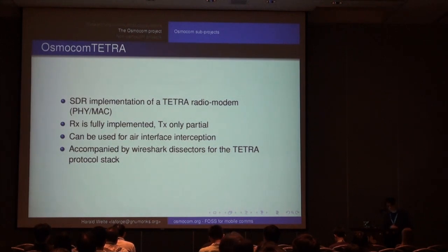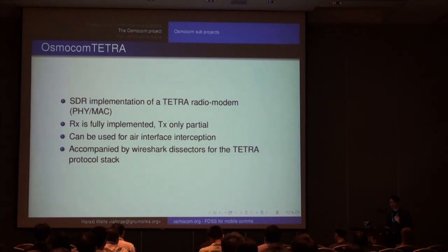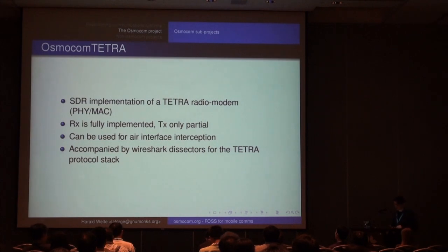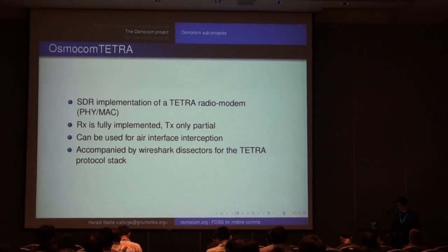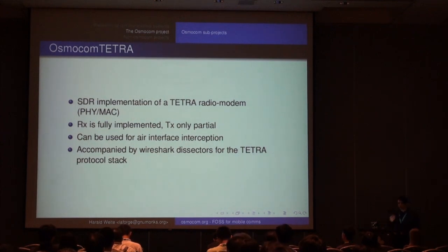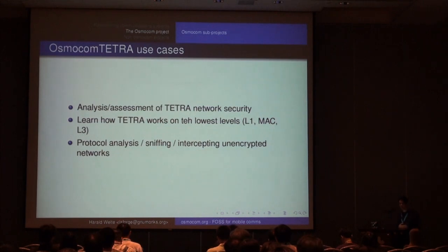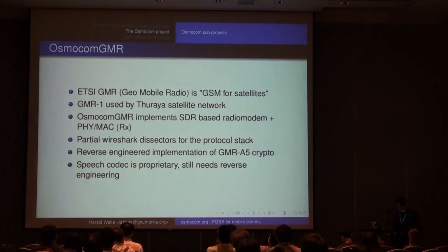There's also OsmoBTS, which implements the BTS part that was previously the proprietary element, using different open hardware boards. Moving beyond GSM, Osmocom Tetra is a software-defined radio implementation of the Tetra professional mobile radio system, used by police, the Taiwan Coast Guard, airports for ground staff, and the Air Force. Osmocom Tetra is mostly a receiver implementation, and you can forward all the messages into Wireshark to decode and analyze the protocol. In unencrypted Tetra networks — of which there are many in Europe — you can actually decode the speech and listen to radio communications.